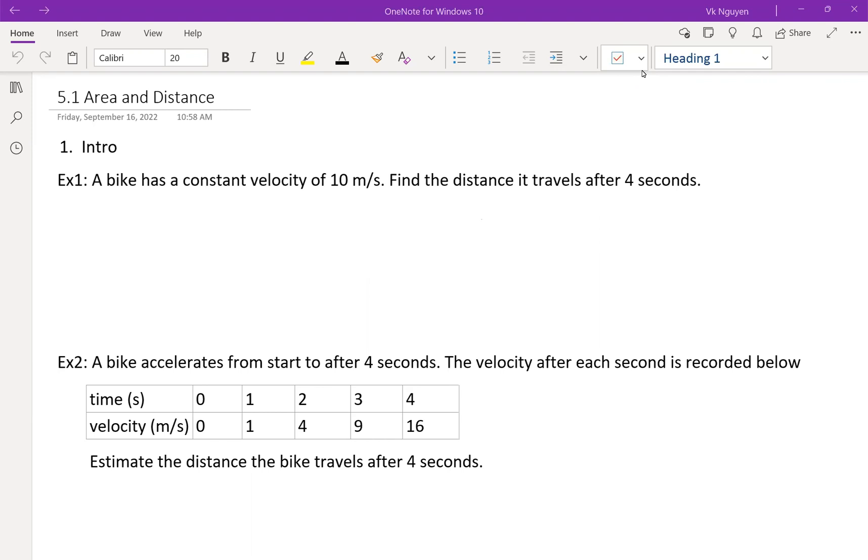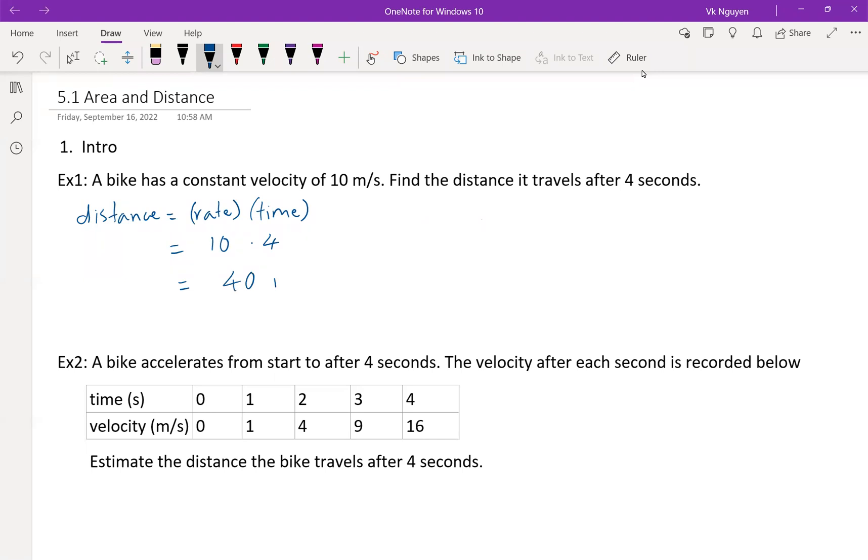Example 1, a bike has a constant velocity of 10 meters per second. Find the distance it travels after 4 seconds. We know distance is rate times time. The rate is constant, 10, the time is 4. So we have 40 meters.